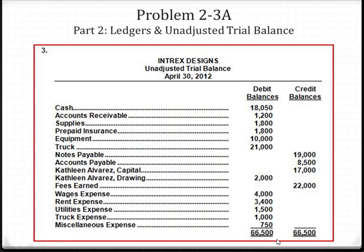In this particular case, we had debit balances of $66,500 and credit balances of $66,500. If I were completing this accounting work, I would feel very confident that I've done my job correctly with recording transactions, because all accounts with a debit balance are in the debit column and all accounts with a credit balance are in the credit column, and my debits and credits equal.